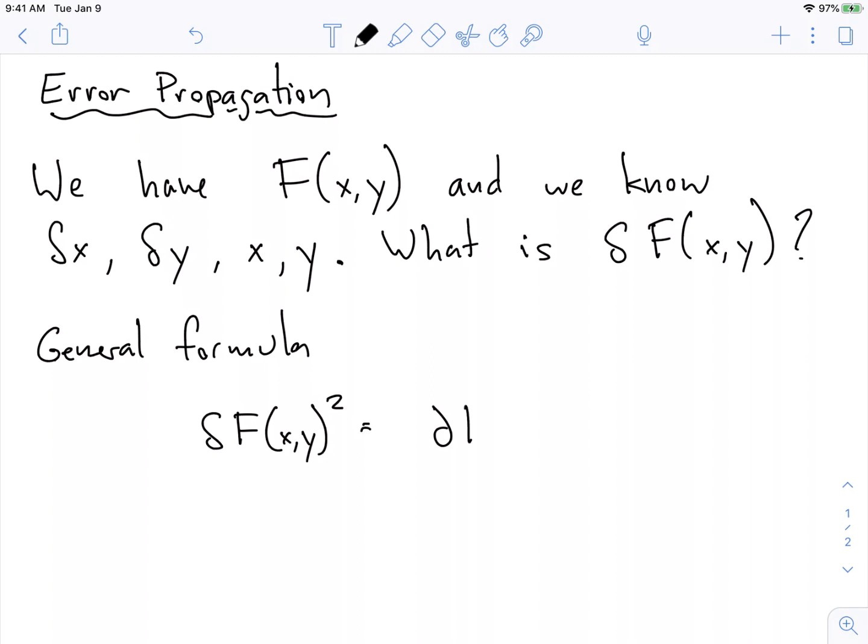But it's equal to the derivative of f of x and y with respect to x times the error in x all squared, plus the derivative of this function x and y with respect to y times the error or the uncertainty in y all squared. And if I had more variables, this formula would just keep going.